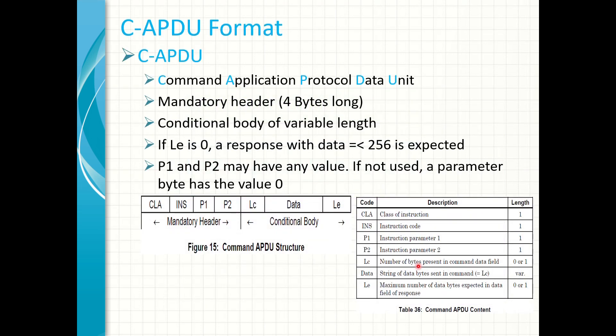A command APDU consists of two main fields. The first is a mandatory header which is always four bytes long. It is made up of four components, each one byte long: the class byte, the instruction byte, instruction parameter 1 (P1), and instruction parameter 2 (P2). The next field is the conditional body field.